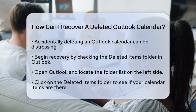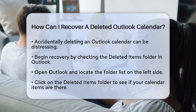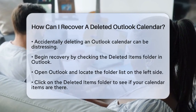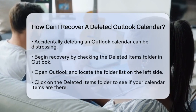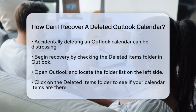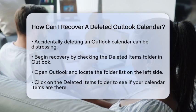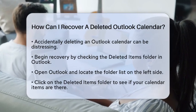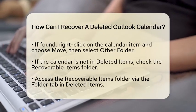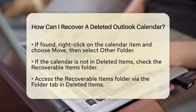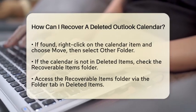First, when you delete a calendar in Outlook, it usually goes to the deleted items folder. So the first thing you should do is check there. Open Outlook and look for the folder list on the left side. Click on the deleted items folder. Once you are in there, see if your deleted calendar items are listed. If you find them, right-click on the calendar item and choose Move, then select other folder to move it back to your calendar folder.